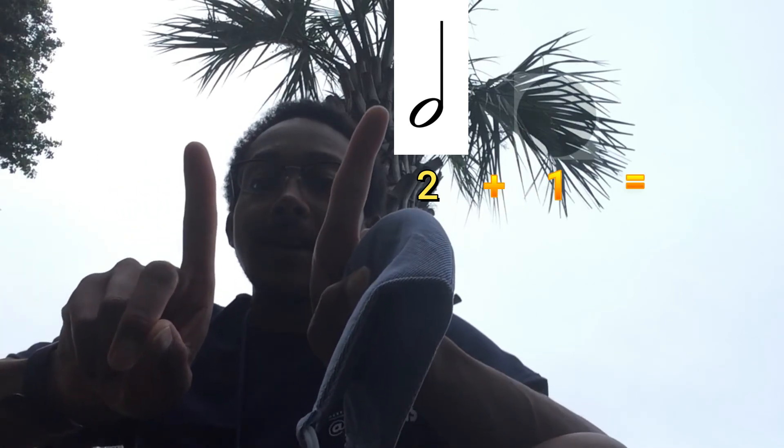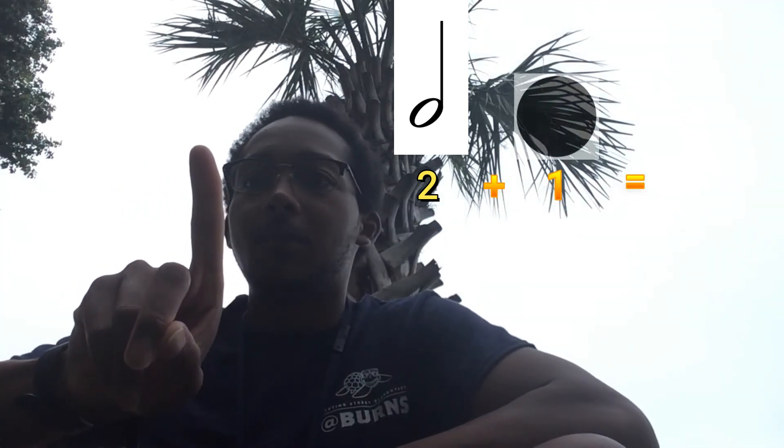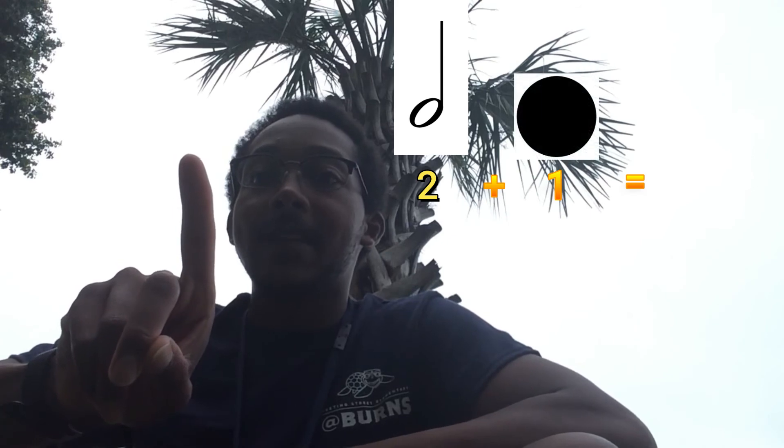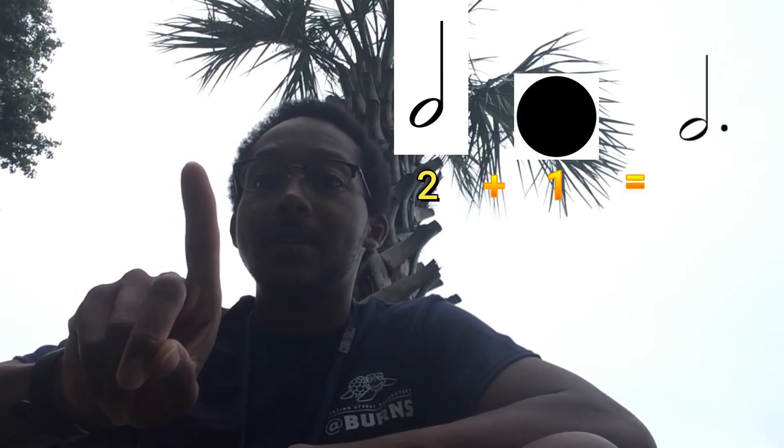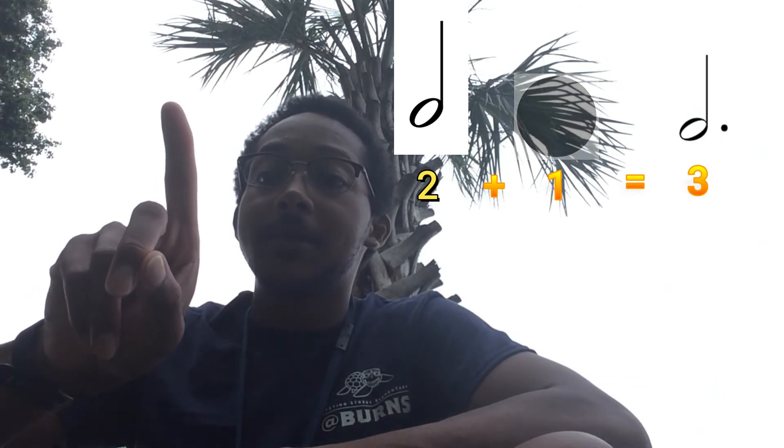For example, let's look at this half note. We know that a half note is worth two beats. So what is half of two? Half of two is one. So now we take the half note that is two beats, add to it the dot, which is half of the value — which is one beat — and we equal three. So the dotted half note is equal to three beats. Remember that the dot adds half of the value to the note.